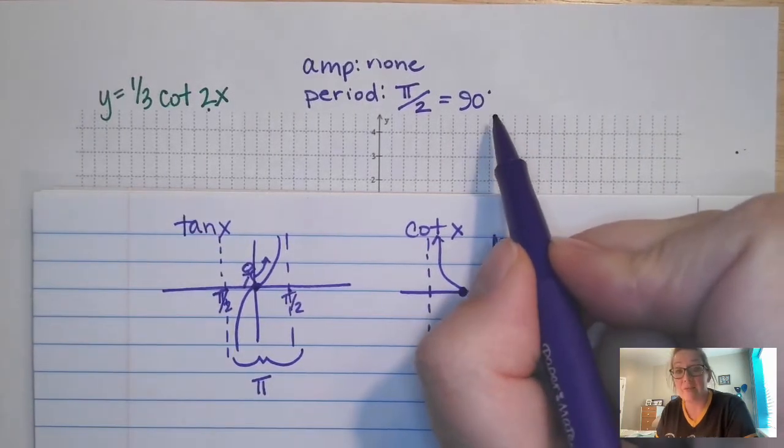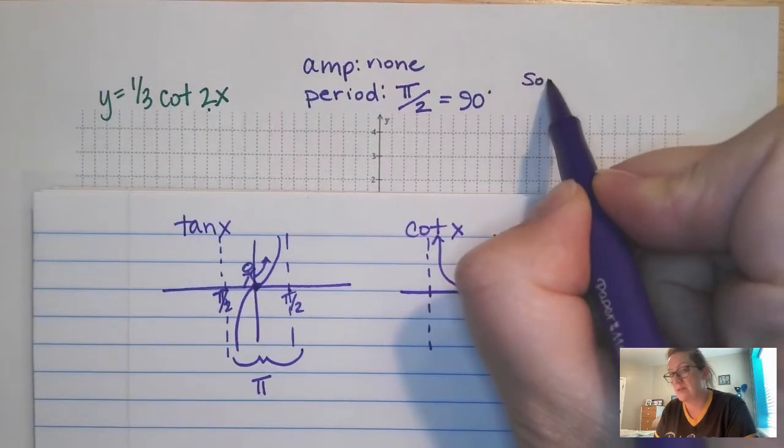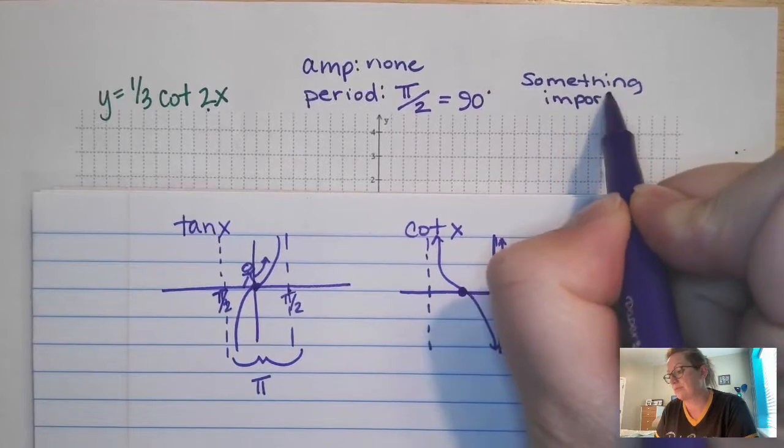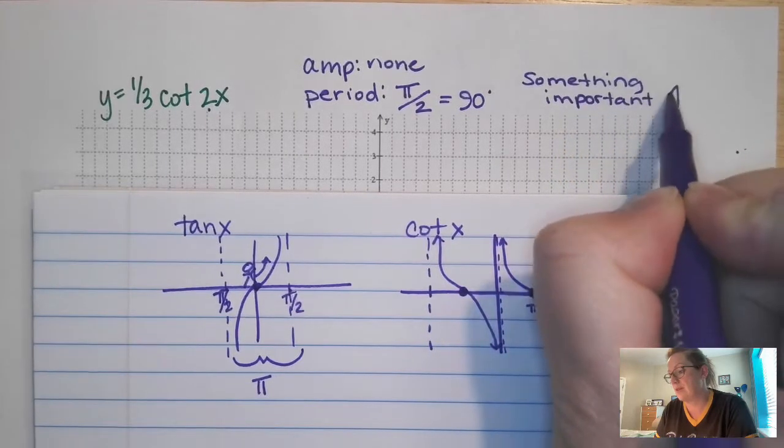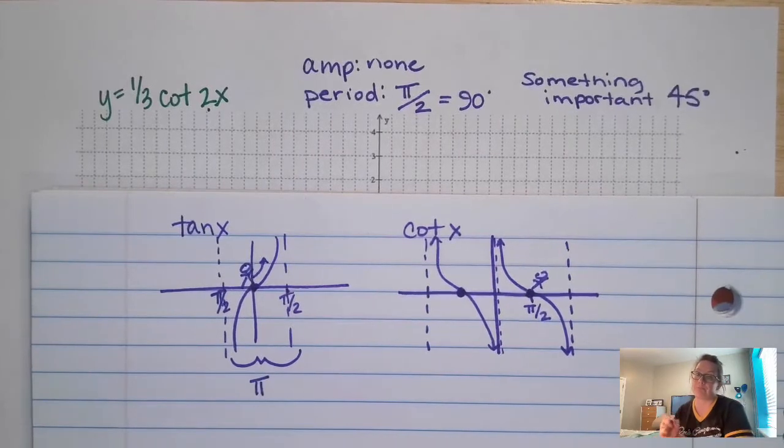And then that means if we take this value and divide it by 2, we have something important every 45 degrees, or pi over 4.